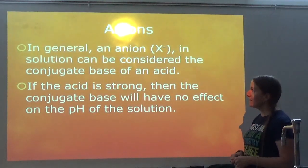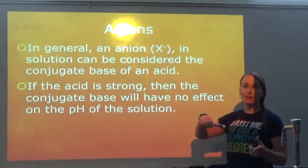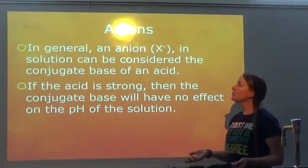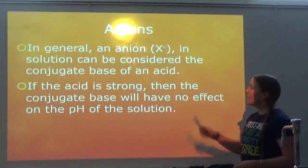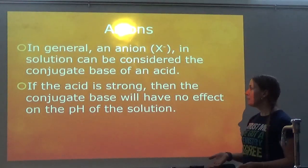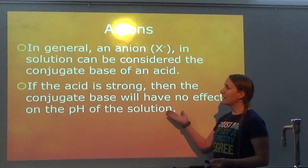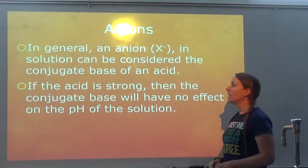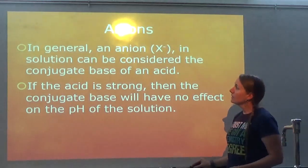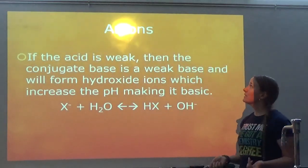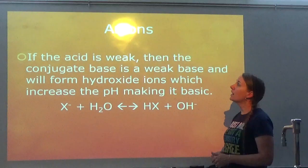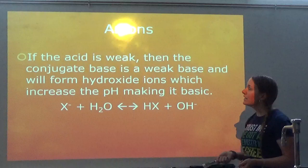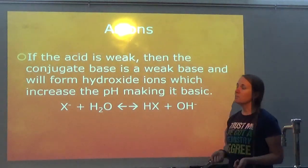In general, an anion — the negative ion — in solution can be considered the conjugate base of an acid. If the acid is strong, the conjugate base will have no effect on the pH, because strong acids have negligible conjugate bases. If the acid is weak, then the conjugate base is a weak base and will form hydroxide ions, which increase the pH, making it basic.